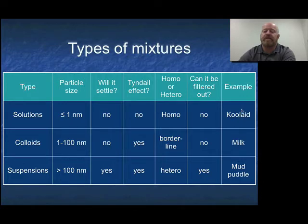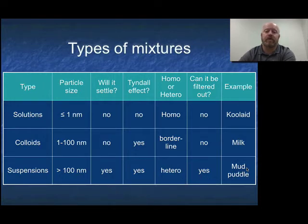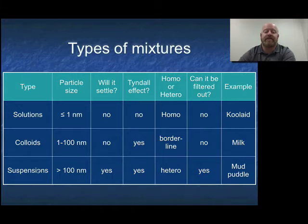Some examples: Kool-Aid, salt water, coffee, pop, and tea are all great solutions. Colloids are often dairy-based products — creams, milks, gelatins. Suspensions are things you have to shake. For example, orange juice — they tell you to shake it before drinking because the pulp settles to the bottom over time. If you have to shake it, it's a suspension. If you don't, it's either a solution or a colloid.